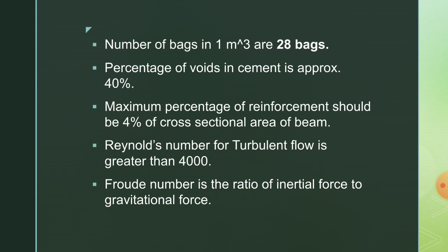Reynolds number for turbulent flow is greater than 4000. For laminar flow it is less than 2000. Between 2000 and 4000 it is transitional flow.